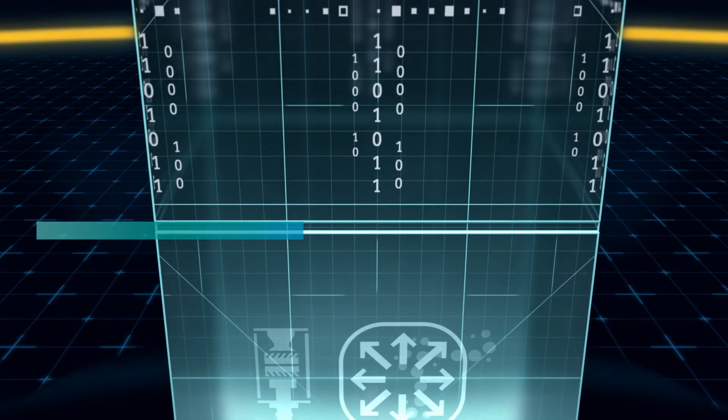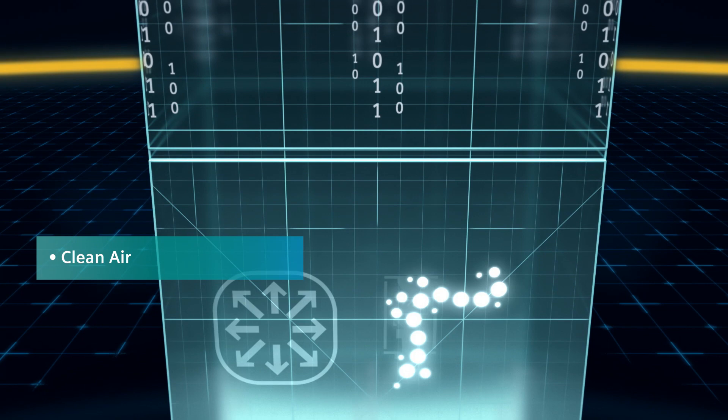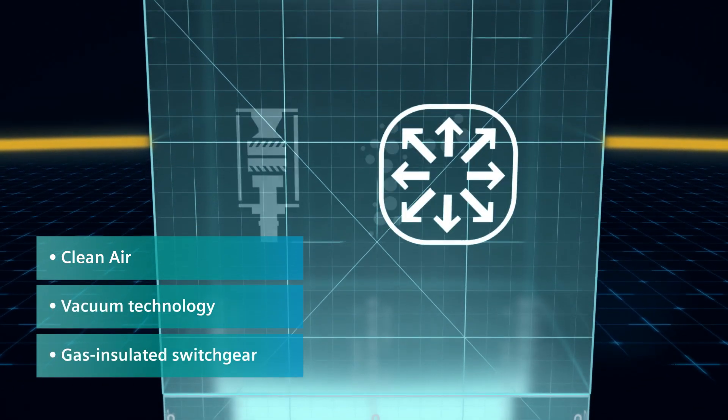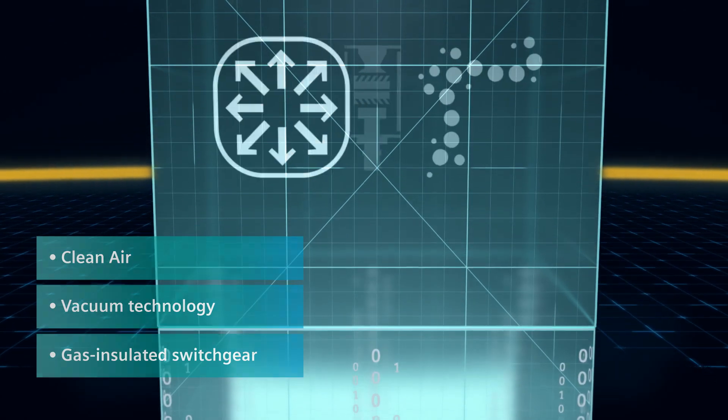The Blue GIS works with clean air, switching technique based on proven vacuum technology, and all the benefits of Siemens gas-insulated medium-voltage switchgear.